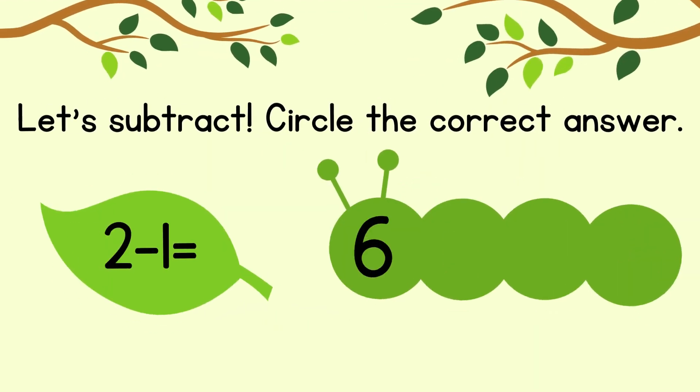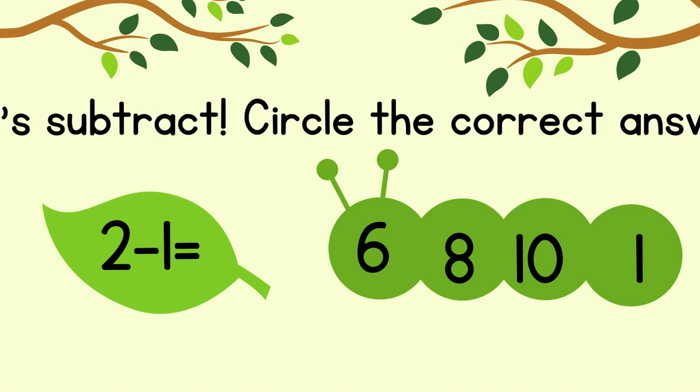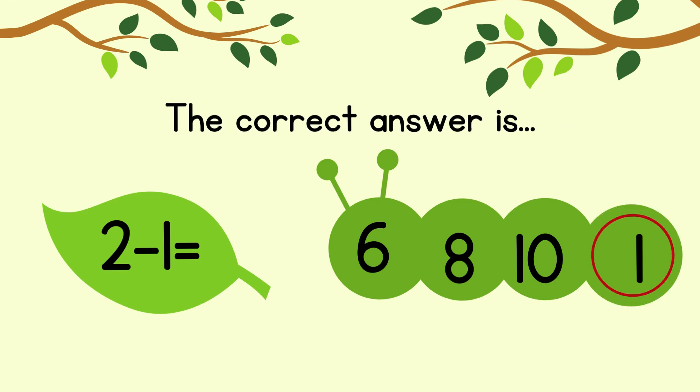Circle the correct answer. 2 minus 1 equals. The correct answer is 1.